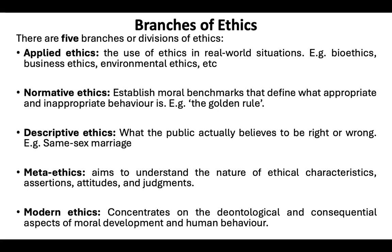Normative ethics establishes moral benchmarks that define what appropriate and inappropriate behavior is. With normative ethics, society wants to establish moral standards that help people know what is acceptable behavior and what is not. An example is the golden rule: do unto others as you want others to do unto you. This becomes a standard for everybody, guiding behavior to determine whether a particular action is appropriate. If you would not like something done to you, then the logic is you shouldn't do that to other people. That is the norm society sets for everybody.